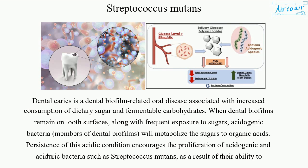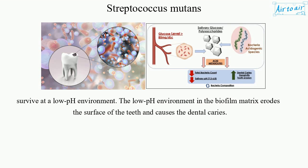Persistence of this acidic condition encourages the proliferation of acidogenic and aciduric bacteria such as Streptococcus mutans, as a result of their ability to survive at a low pH environment. The low pH environment in the biofilm matrix erodes the surface of the teeth and causes the dental caries.